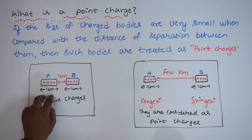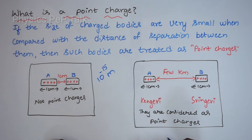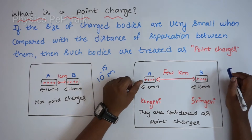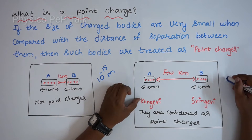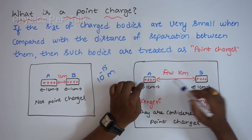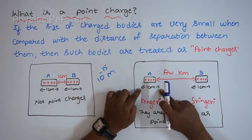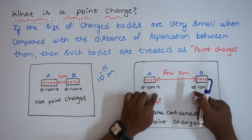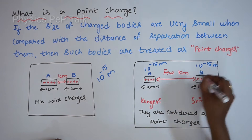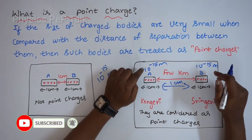Point charges are of the order of 10 to the power minus 15 meters. Now consider the same two bodies of length one centimeter each — I will place body A in Kengeri and body B in Shringeri. The distance of separation is around 450 kilometers, while size is one centimeter. Such bodies are considered as point charges because the size is very much smaller than the distance of separation.